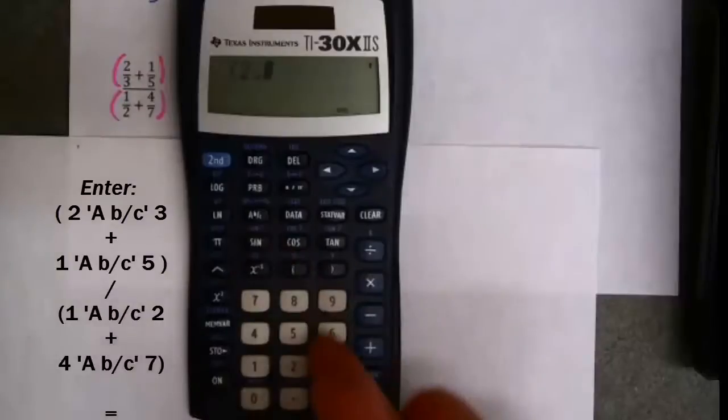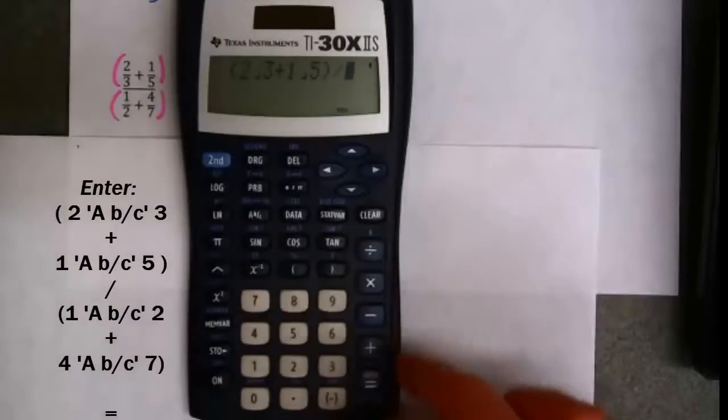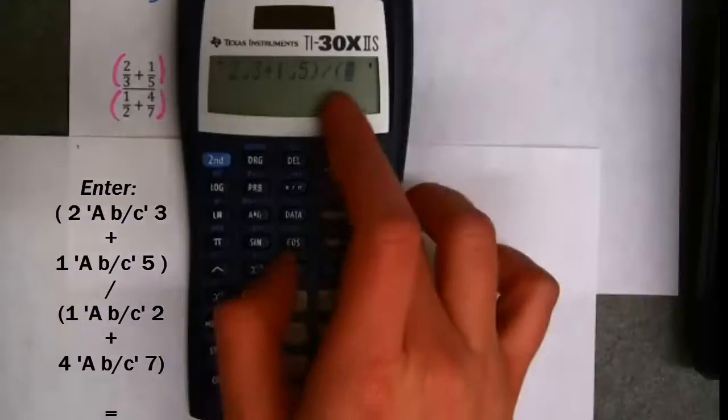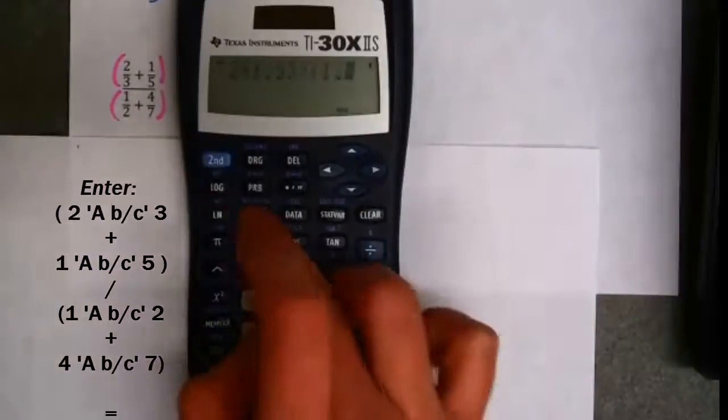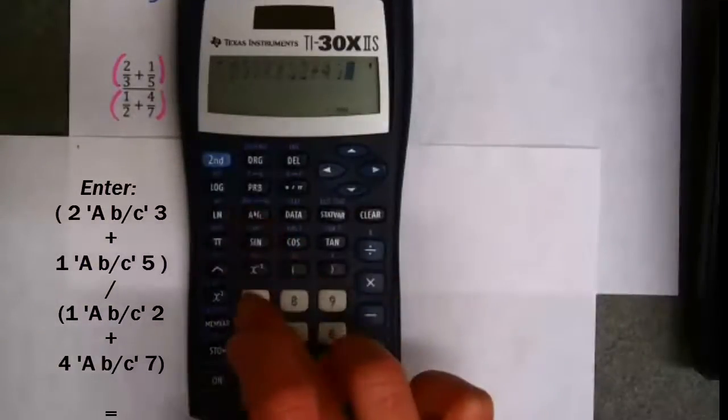Parentheses, 2 3rds, plus 1 5th, parentheses. Now I'm going to use divided by here. I don't think it will let you use the fraction button in between. I'll start a new parenthesis for my denominator. 1 fraction button 2, plus 4 fraction button 7.